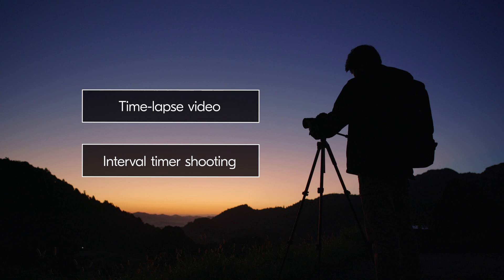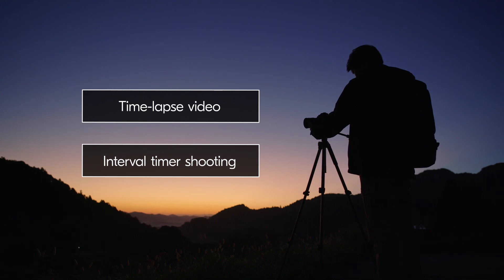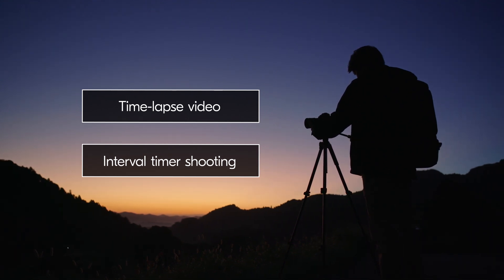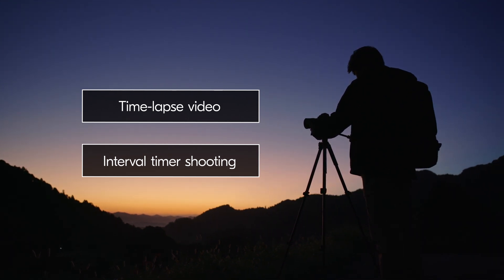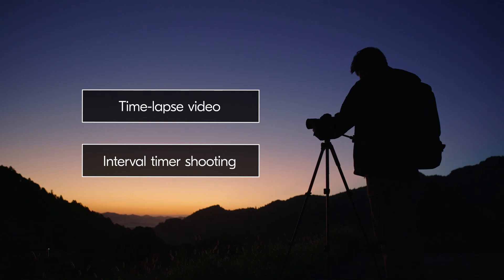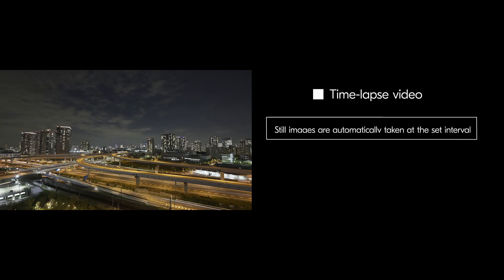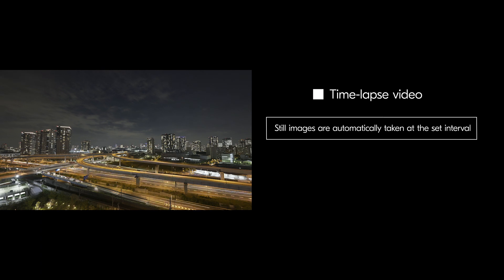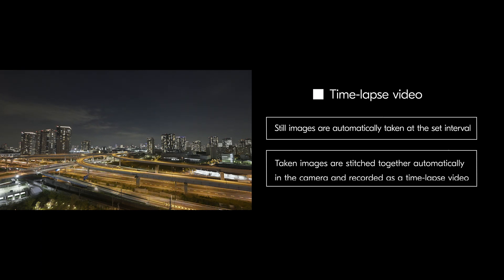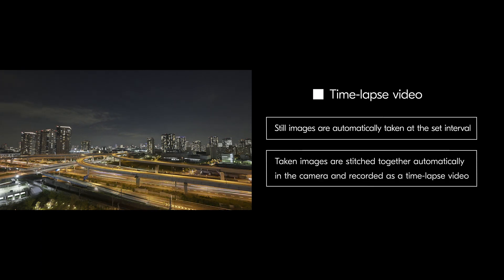There are two ways to create time-lapse video from still images taken in HLG tone mode. With the time-lapse video function, still images can be automatically taken at a set interval, stitched together, and recorded as a time-lapse video in camera.